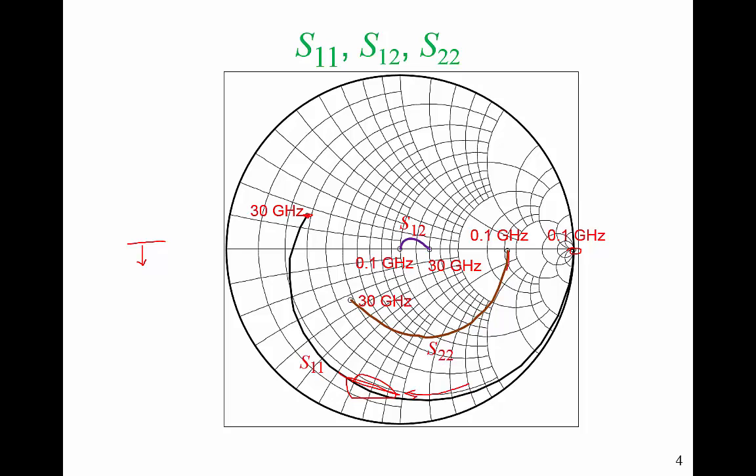S22 is here, again, it is capacitive if the output reflection coefficient looking into the output of our transistor, the drain source connection of our transistor, is close to S22, it's going to look capacitive. And S12, well ideally it would be 0, but S12 is fairly small.